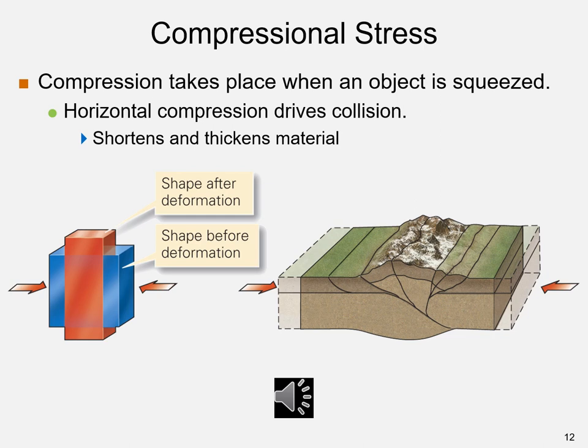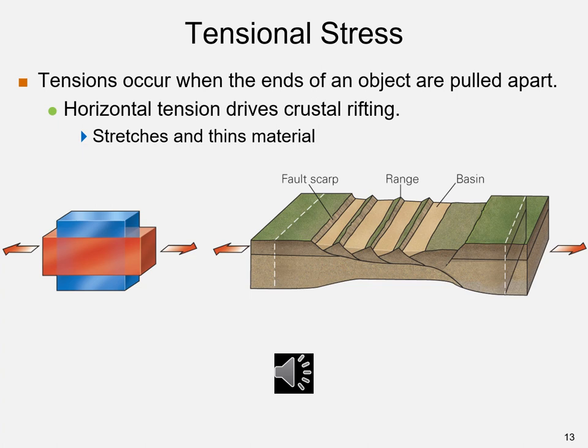Tensional stress occurs when the ends of an object are pulled apart, which stretches and thins material, causing elongation. A good example is the Basin and Range Province of North America. A cube and rectangular prism show the tensional stress direction in red and the strain in blue. The second diagram shows horizontal tension with a part of the Earth's crust driving crustal rifting, creating ranges and basins along fault scarps.